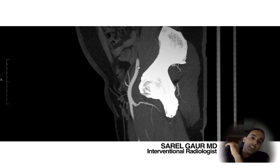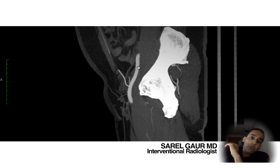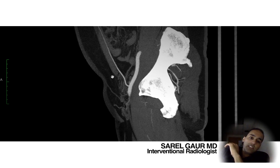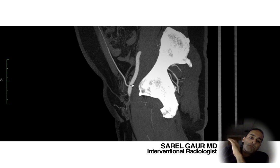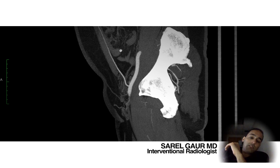The external iliac artery is a structure which courses in the retroperitoneal space. Depending on where you access it, if you're up at this level, there is almost no way for you to really control the site or provide adequate compression. You'll be pressing on the belly with abdominal contents in your way as you try to compress this vessel against a bony structure, of which there's really not much back there.